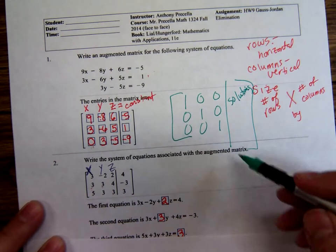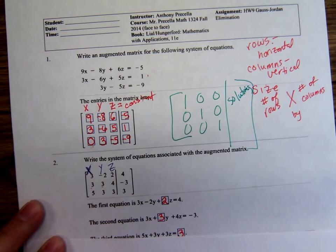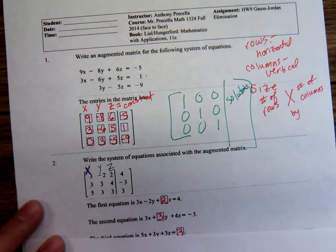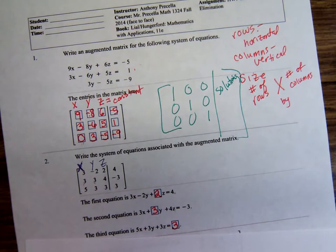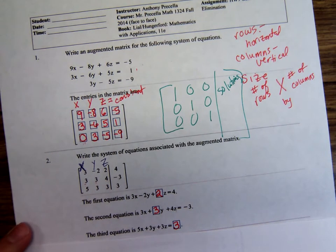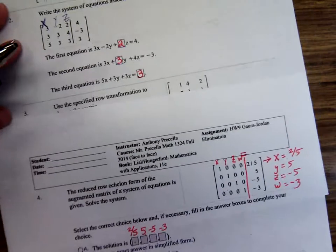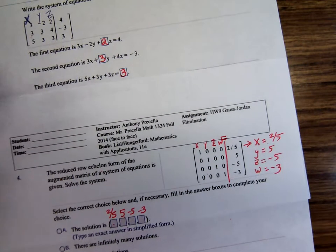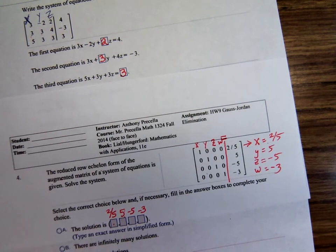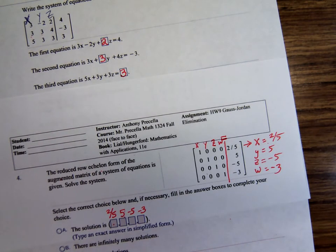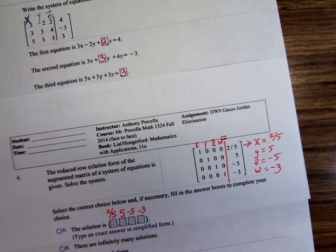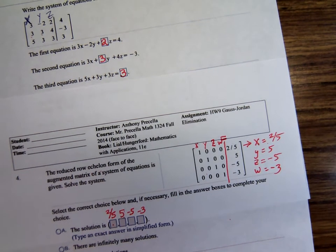So this 1s down the diagonal, 0s everywhere else, is called reduced row echelon form. If you look under document sharing, let me see. I'll pull up a document that formally defines reduced echelon form. We'll look at that for a moment and then we'll move on.